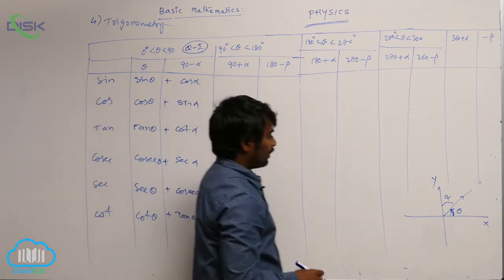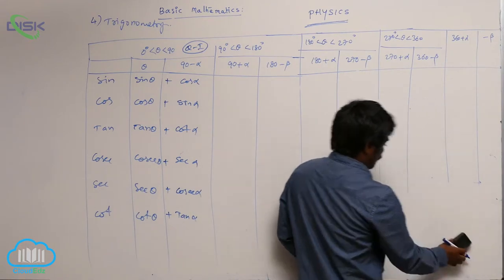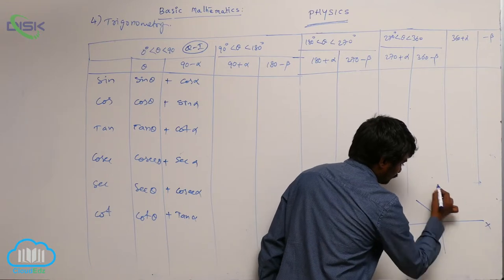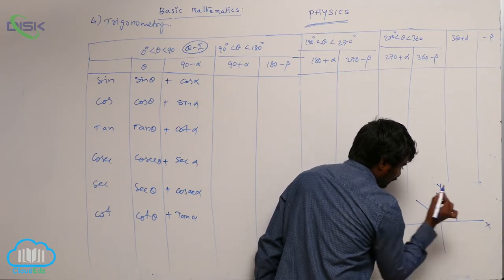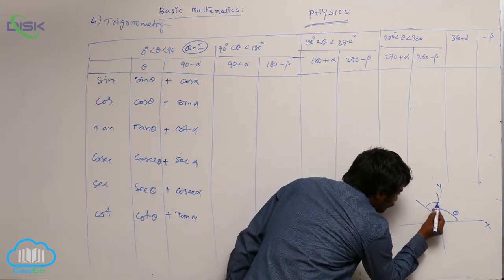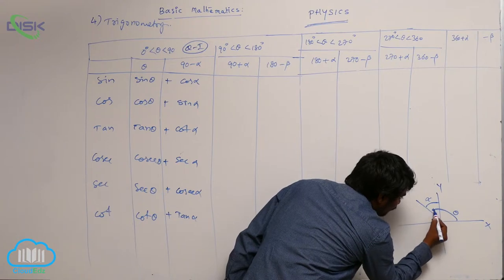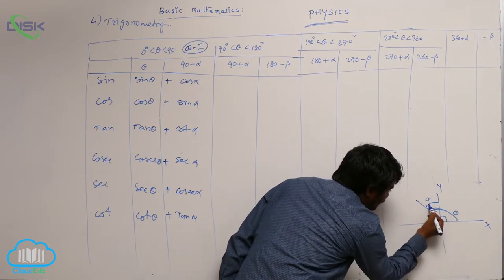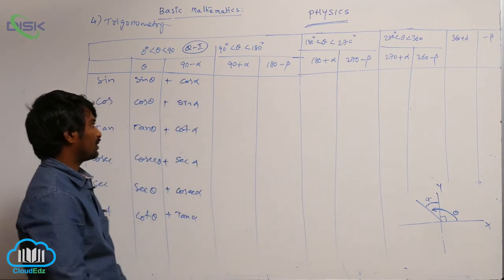For the case of 90° + α: suppose the given angle is alpha but we need the theta value, so we can write theta as 90° + α. This angle is in the first quadrant, so all trigonometric ratios are positive — that's why we write plus.